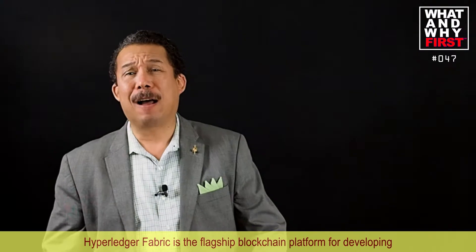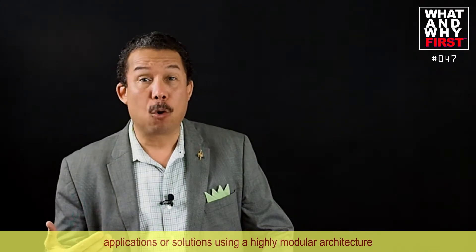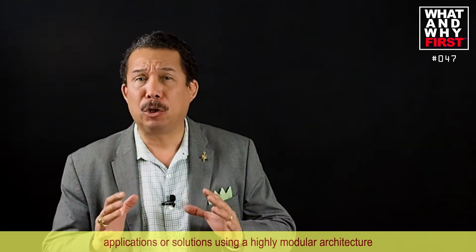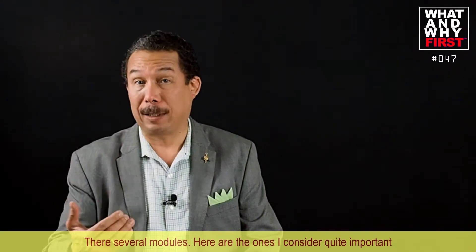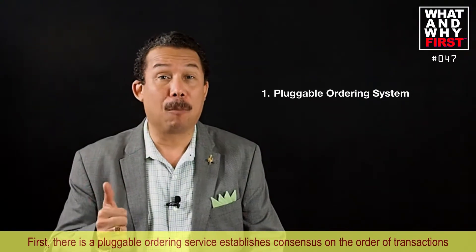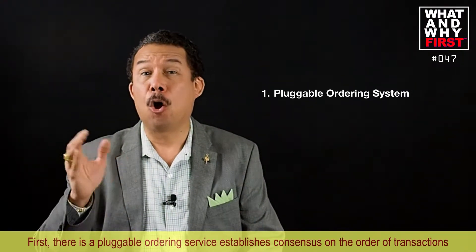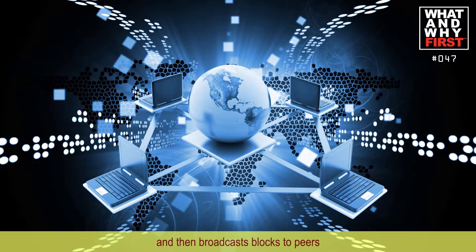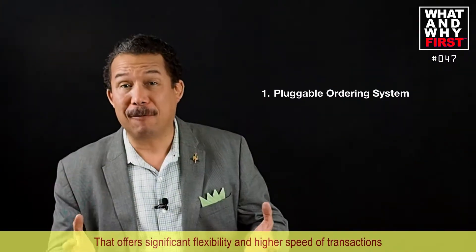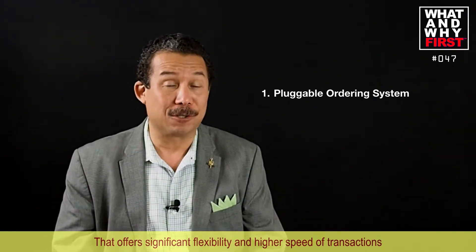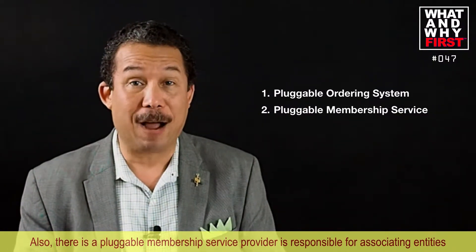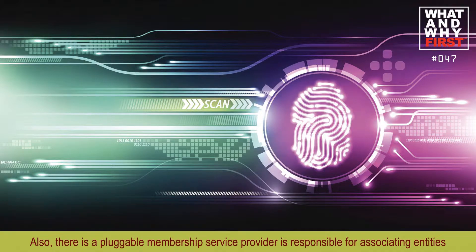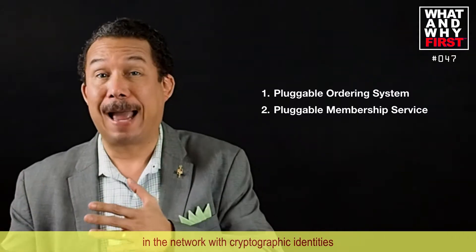Hyperledger Fabric is the flagship blockchain platform for developing applications or solutions using a highly modular architecture. There are several modules. Here are the ones I consider quite important. First, there is a pluggable ordering service that establishes consensus on the order of transactions and then broadcasts blocks to peers — that offers significant flexibility and higher speed of transactions. Also, there is a pluggable membership service provider, which is responsible for associating entities in the network with cryptographic identities.